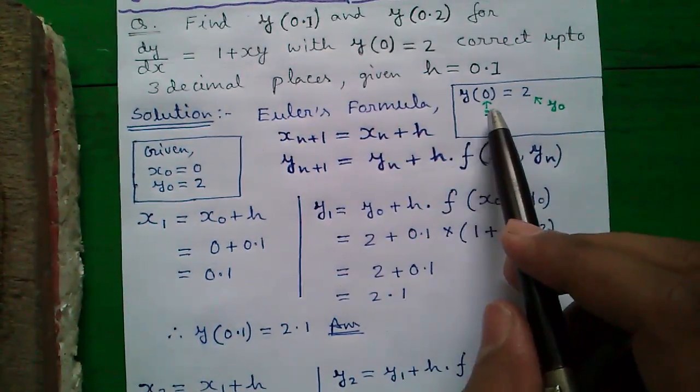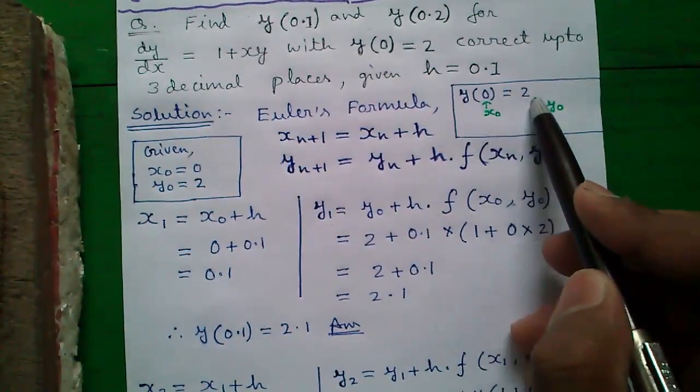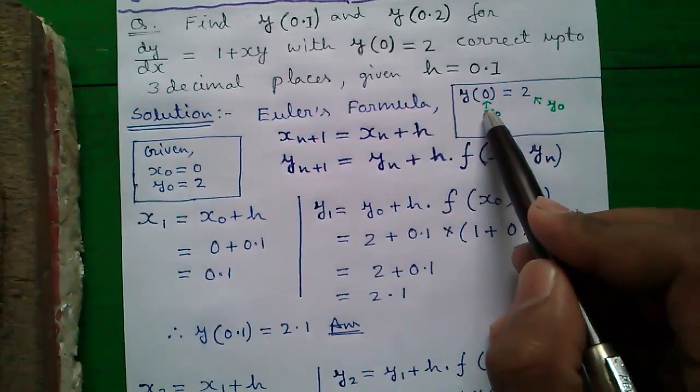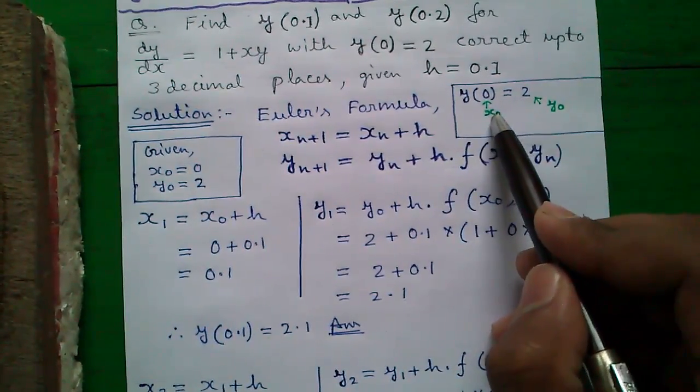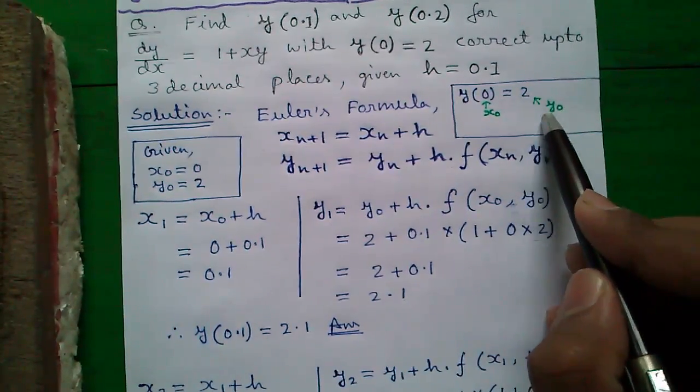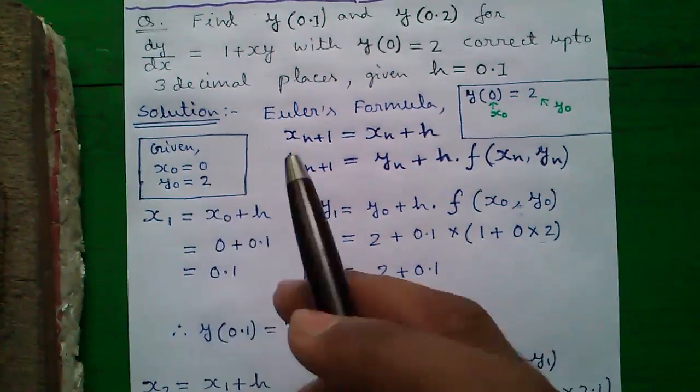I will explain to you. First we have to understand what's the meaning of this. So y(0) equals to 2. The 0 indicates the x_0 value, our starting value for x. And this right hand side value, the 2, indicates the y_0 value, our starting value of y. So x_0 equals to 0 and y_0 equals to 2.